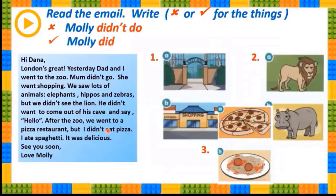Now we have got an email here. A girl called Molly has written an email to her friend Dana. We will read this email and try to find what Molly didn't do and what Molly did. Let's read her email: 'Hi Dana, London is great. Yesterday Dad and I went to the zoo.'